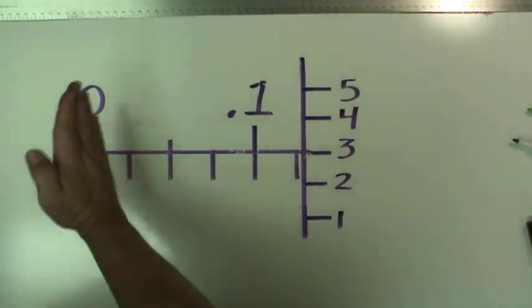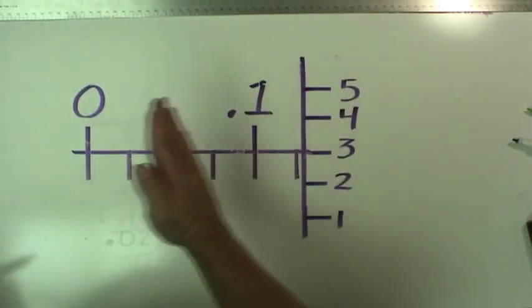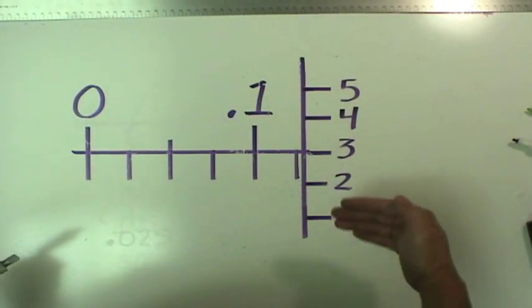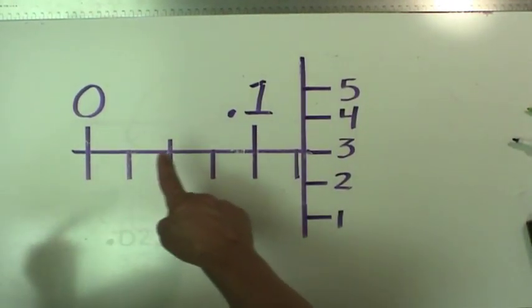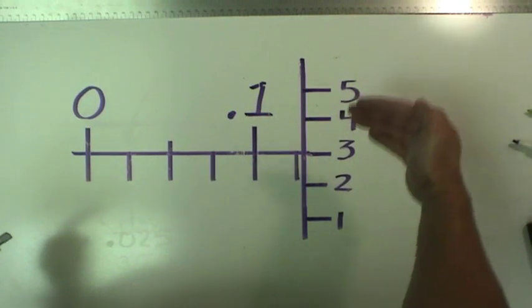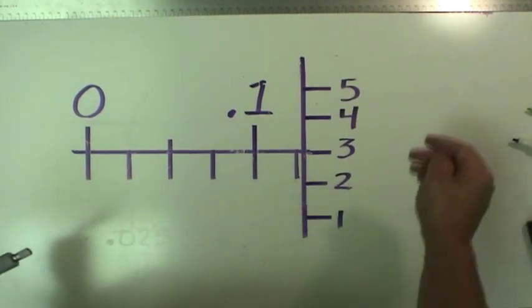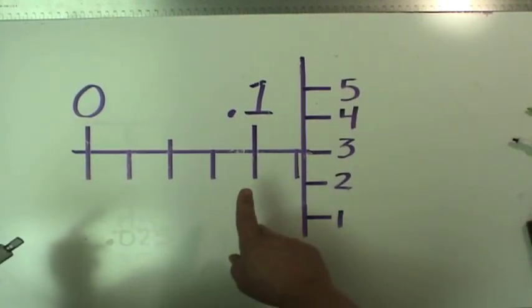So what we do first of all is we see where we are along the barrel scale, and then we'll read on the thimble scale. Now there should be a horizontal line on your instrument, and that's showing you where to read this thimble scale. So what's the reading on this micrometer?